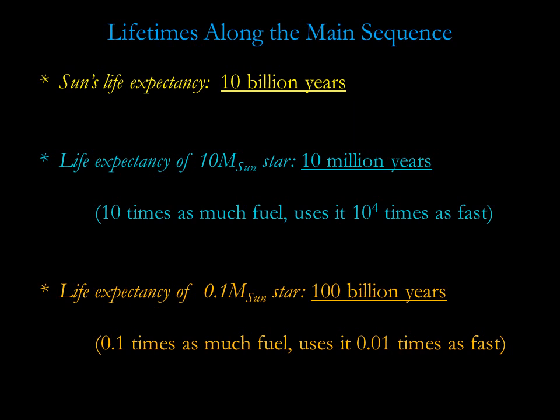Our sun will spend a total of 10 billion years on the main sequence fusing hydrogen into helium. A 10 solar mass star will only spend 10 million years on the main sequence. A much smaller star, one with a tenth of the mass of the sun, will spend 100 billion years on the main sequence. This is longer than the age of the universe, which we know to be about 13.8 billion years.